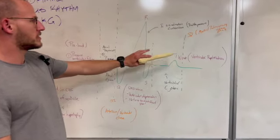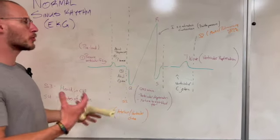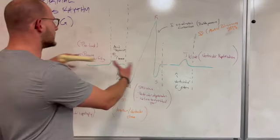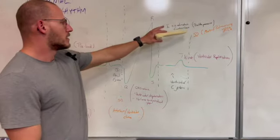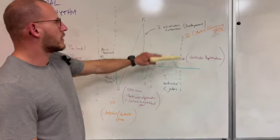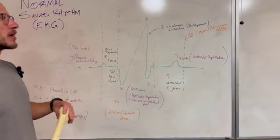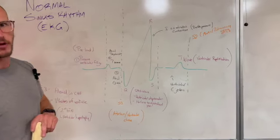So then the T wave happens, which is where the ventricles are kind of repolarizing, getting ready for this next phase. And then during this, like shortly after this T wave here, you have the aortic and the pulmonary valve closing once again to just prevent the backflow of blood.